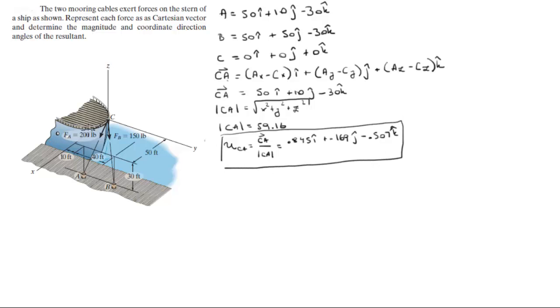This unit vector from C to A multiplied by F of A—we're given the magnitude of F of A which is 200 pounds—so F of A Cartesian vector form can be found by multiplying the unit vector from C to A times the magnitude of F of A, which comes out to be 169i plus 33.8j minus 101.4k.